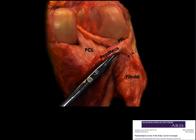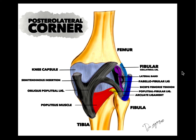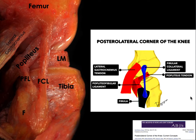This anatomical specimen shows the popliteus tendon, the popliteofibular ligament, and the posterior cruciate ligament. This excellent illustration depicts all the posterolateral corner structures: the fabelofibular ligament, the biceps femoris tendon, the arcuate ligament, and the popliteofibular ligament. In the lateral cross-section or lateral view, you can see the popliteus tendon and the ligament arising from the popliteus to the fibula — hence the name popliteofibular ligament.